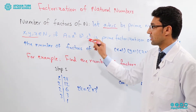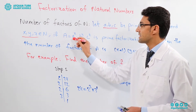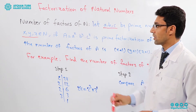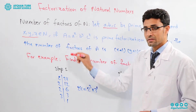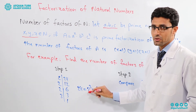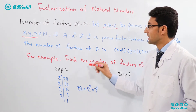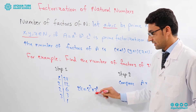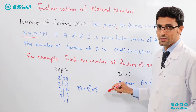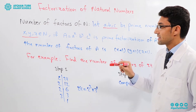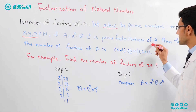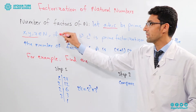If a is equal to a to the power of x multiplied by b to the power of y multiplied by c to the power of z — for example, 24 equals 2 to the power of 3 multiplied by 3 to the power of 1 — this is the prime factorization of a.